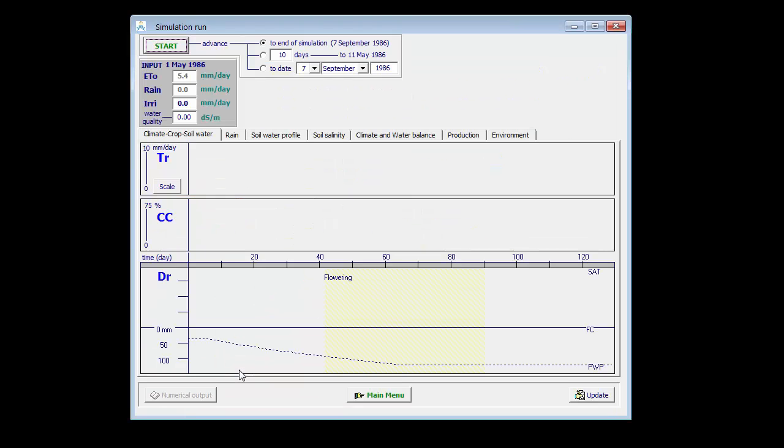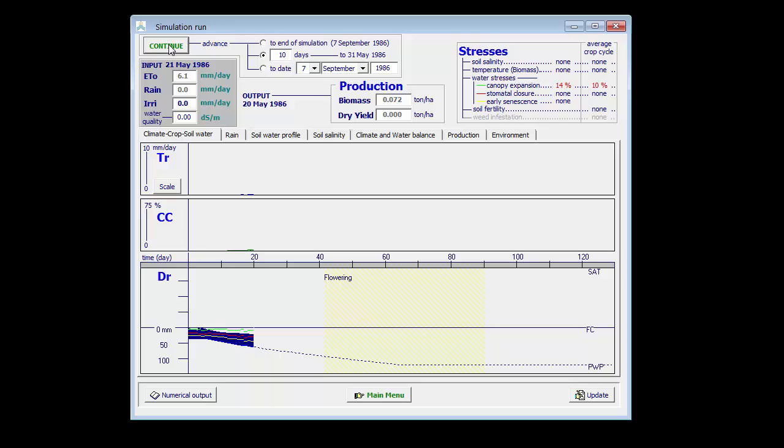However, when I run a simulation, then water stress might affect the canopy development. Let's run the simulation by advancing 10 days, 20 days, 30 days, and 40 days. I can see already that water stress is building up. The water content in the root zone drops below the green line, and this results in a slower canopy development than indicated in the crop file.